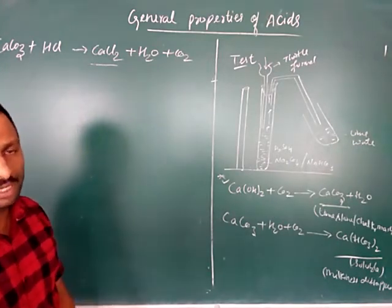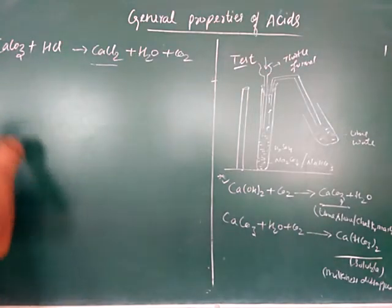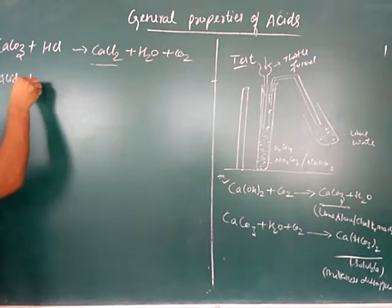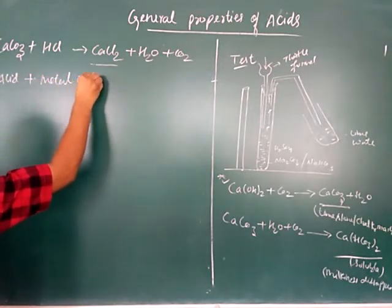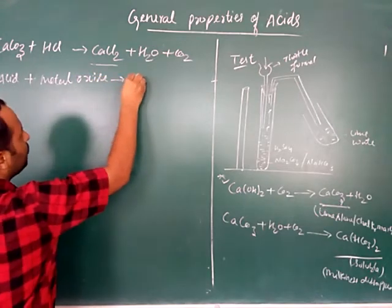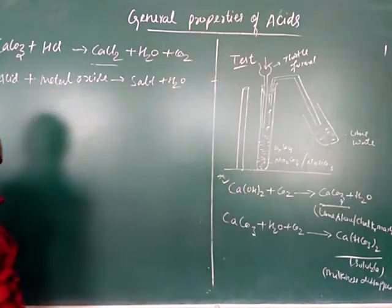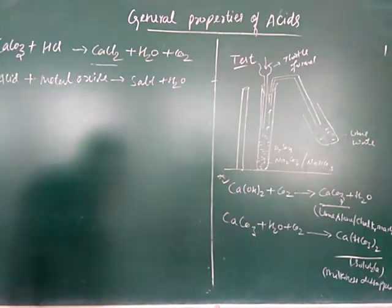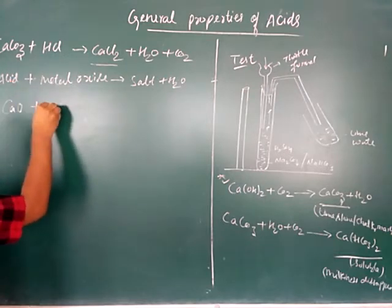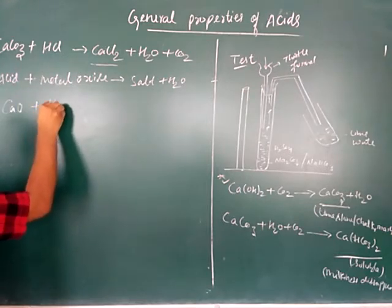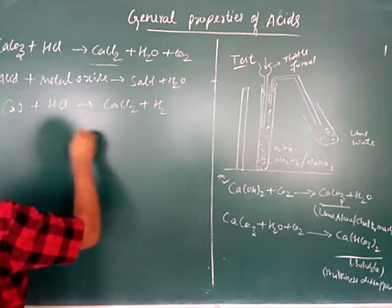Next is the reaction of acids with metal oxides. Acid reacts with metal oxide to form salt plus water. For example: calcium oxide CaO plus HCl gives calcium chloride plus water.